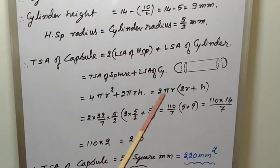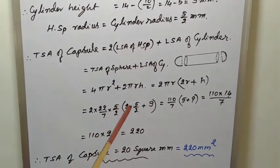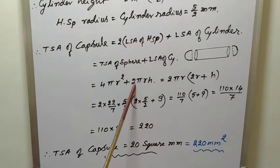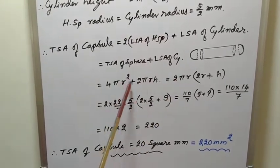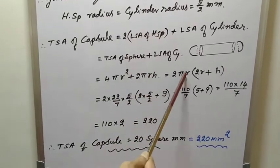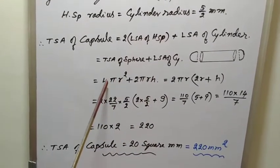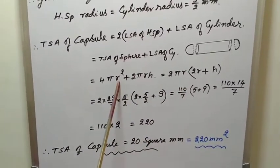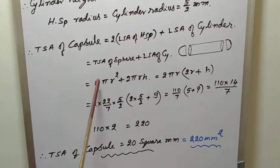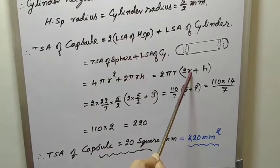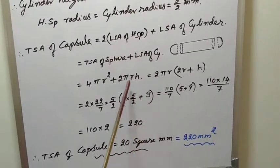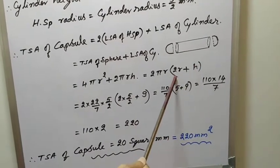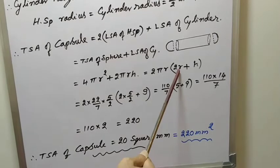It is better if we take common. Simplification will be easy if we take common. Here 4 is there, here 2 is there, so 2 is common. Pi is common, R is there common. So, divide this first term, 4 pi R square by 2 pi R. The quotient is 2R. Divide this by 2 pi R, 2 pi R cancels, H is quotient. So, 2 pi R into (2R plus H).